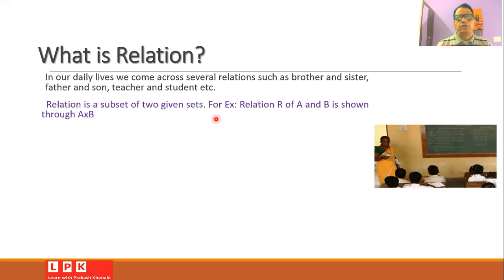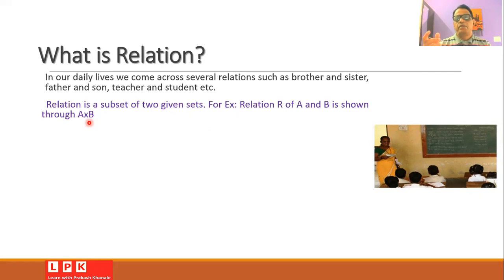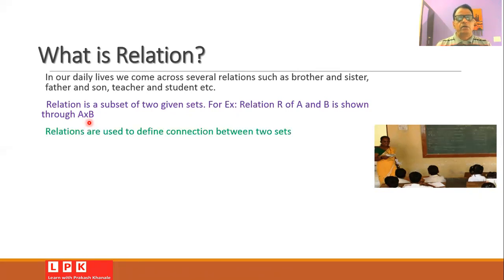This relation R is actually a subset of the given two sets. A relation R from set A to set B can be shown through the Cartesian product A cross B. Whenever we consider two sets and there is some kind of relationship between elements of the first set and elements of the second set, that can be called a relation between the two sets. Relations are used to define the kind of connectivity between two sets.